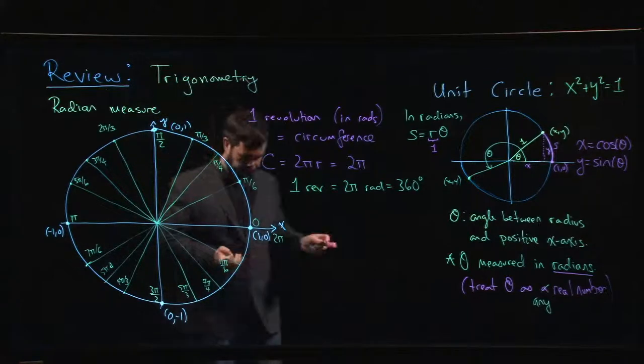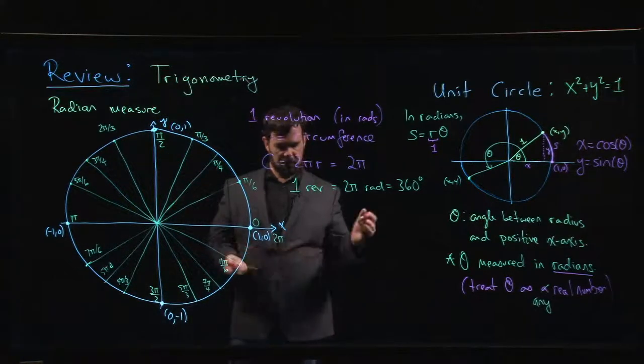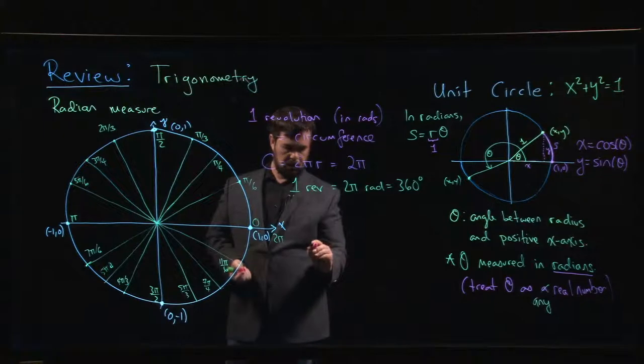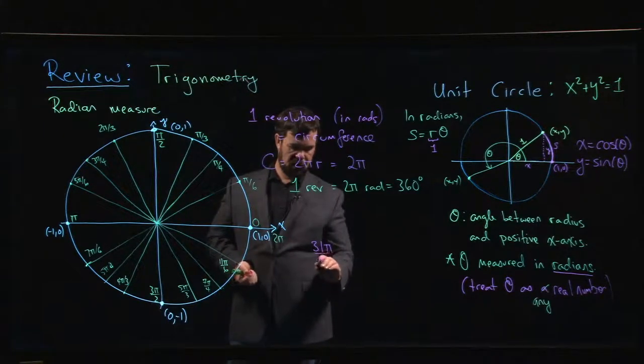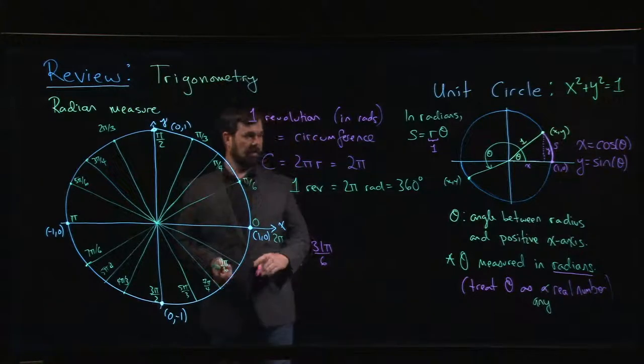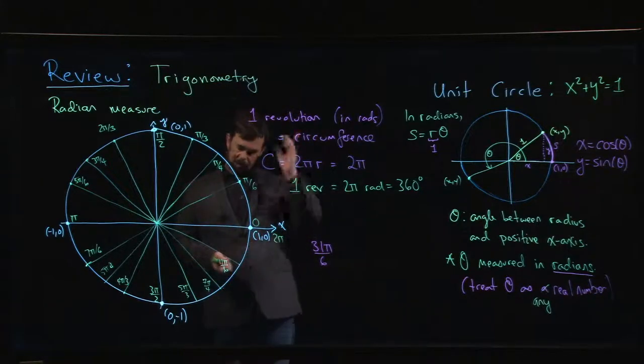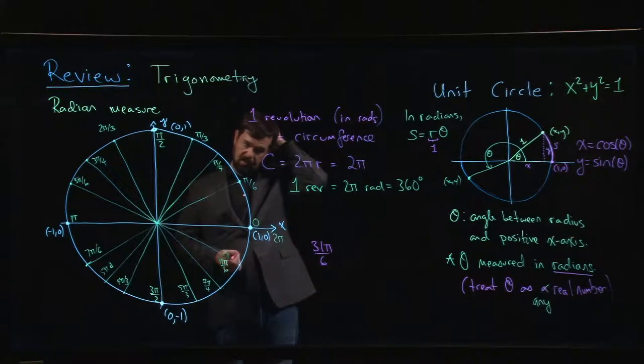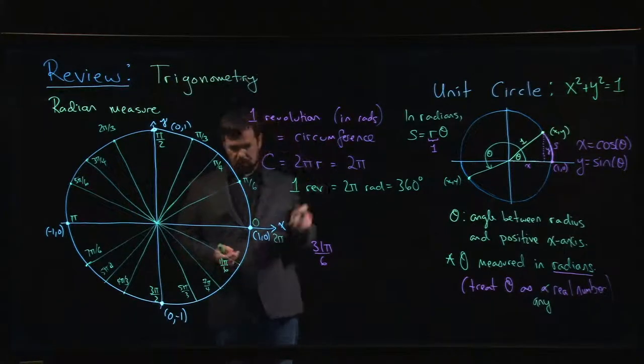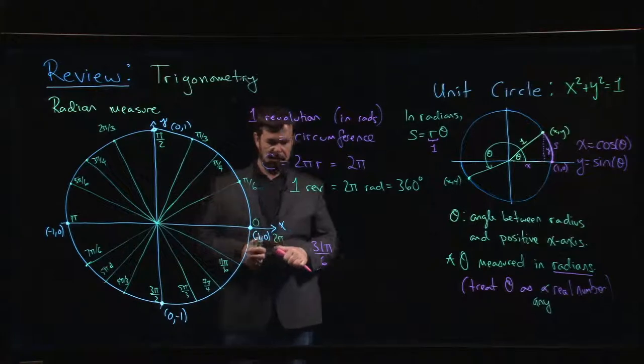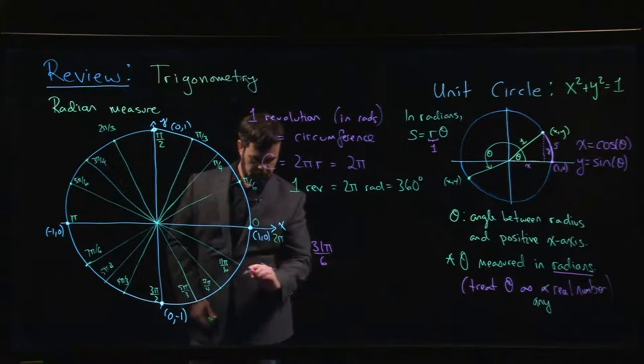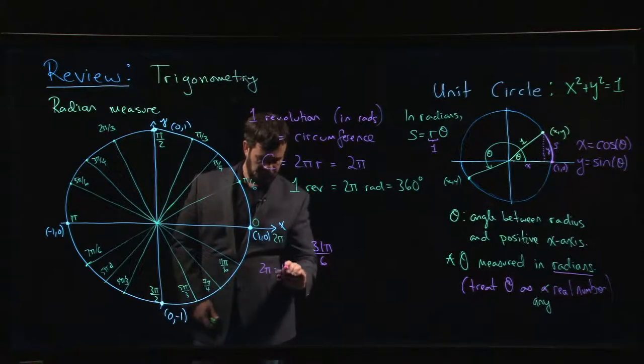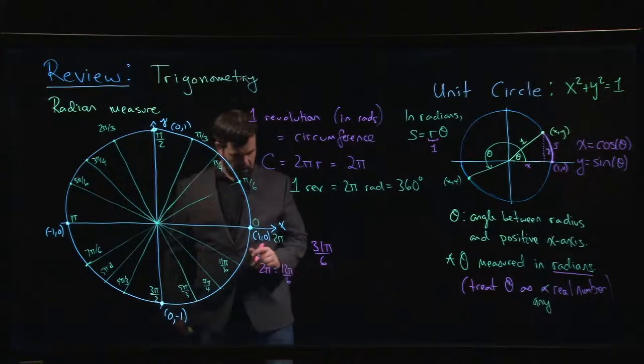The other thing that might come up is somebody gives you something like 31π/6 and asks you to calculate sine or cosine of that angle. You're like, 'Well, 31—that's not on my circle. What do I do with that?' What you do is you have to think in terms of 2π. So 2π would be, if I multiply by 6/6, that's 12π/6.